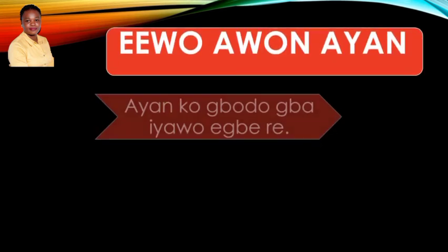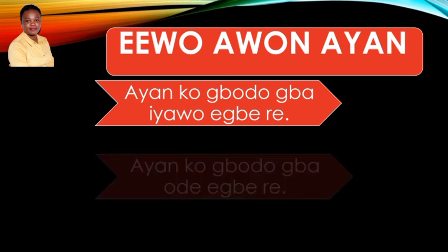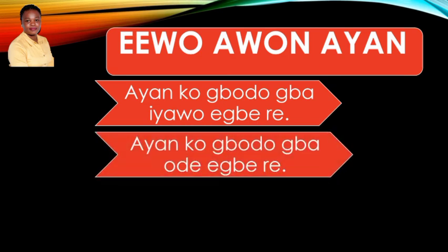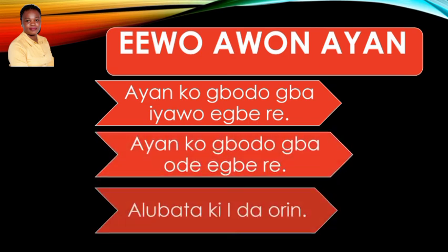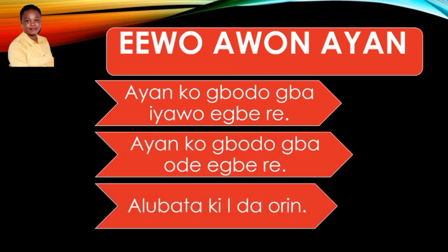So let's look at what they forbid. That is, no wife snatching, no occasion snatching — you can't snatch your mate's occasion. And the last one: no better drummer should lead a song.